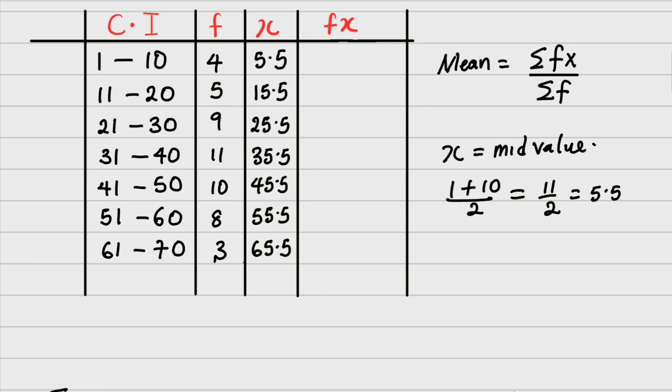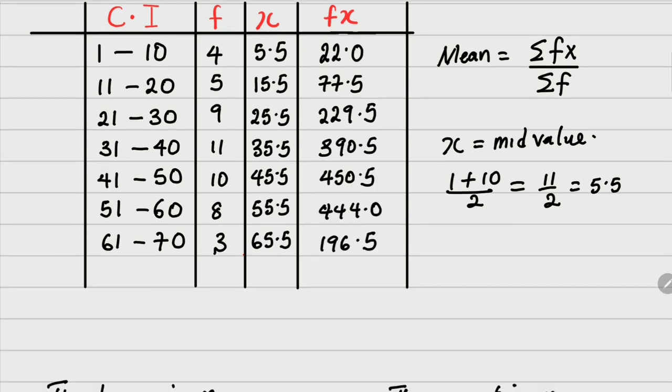fx means what is in the column f multiplied by what is in the column x. So 4 times 5.5, we get 22. And 5 times 15.5 is 77.5. The next, you get 229.5, and it goes on. This is what I have.